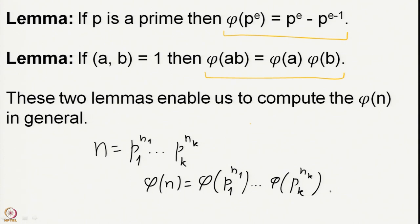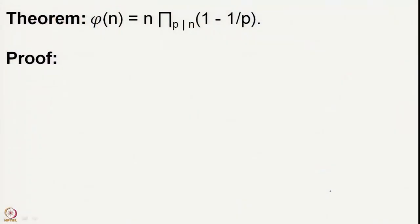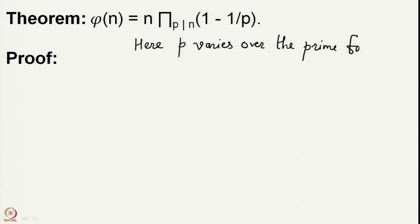There is however one more formula which is quite useful. It tells us that the Euler phi function is n times the product of (1 − 1/p) where p varies over the prime factors of n. Here the symbol denotes a product, and p varies over the prime factors of n.